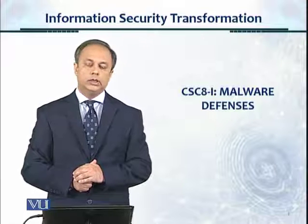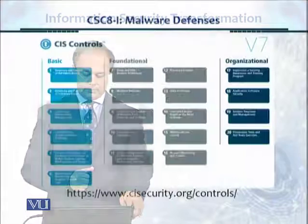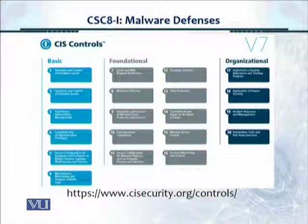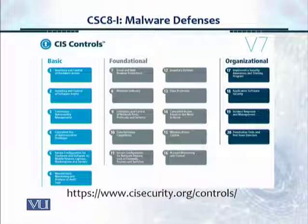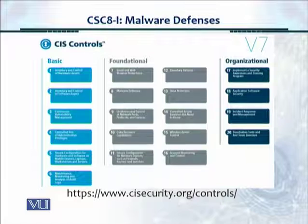Welcome. In this module, we'll look at critical security control from CIS, control number 8, which talks about malware defenses. This is a very important control which gives us certain guidance on how to configure the anti-malware software or tools we're using in our enterprise. We are at CSC 8, or critical security control, from the top 20 security controls of CIS. This is part of the foundational controls, and the title is Malware Defenses.